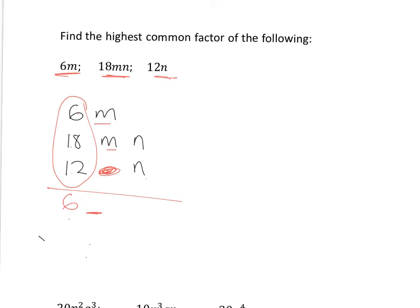And n, can I include that? Well, can n divide into each and every one of these? Well, if I have a look at them here very neatly, I can see it's missing from here. So I can't include n in my common factor, because if I did include it in my common factor, my common factor would not be able to divide into 6m. So my highest common factor of these three things is just 6.